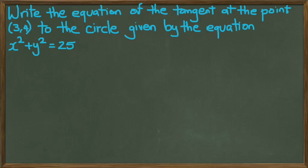Here's a question. Write the equation of the tangent at the point (3,4) to the circle given by the equation x squared plus y squared equals 25. So, the first thing we want to do is we're going to differentiate the conic.